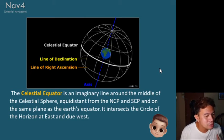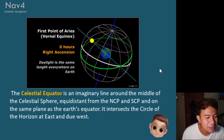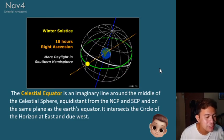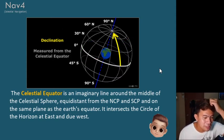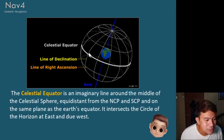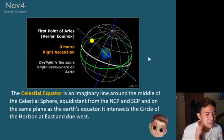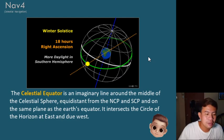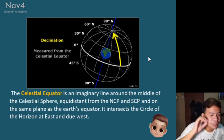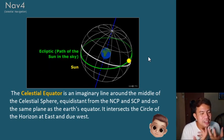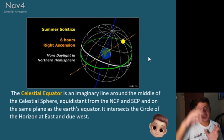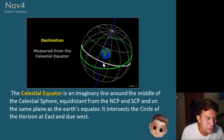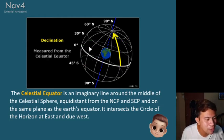The celestial equator is an imaginary line around the middle of the celestial sphere, equidistant from the North Celestial Pole and the South Celestial Pole, and in the same plane as the Earth's equator. It intersects the circle of the horizon at due east and due west. The celestial equator is 90 degrees from each celestial pole, both north and south.